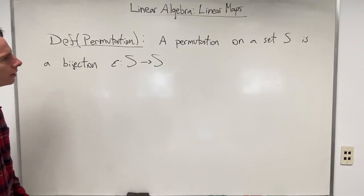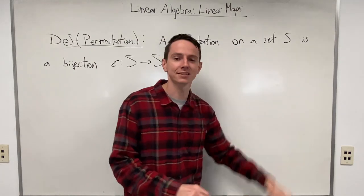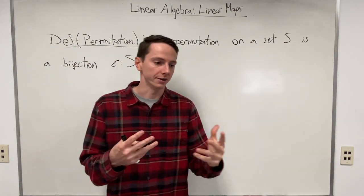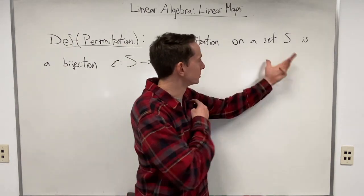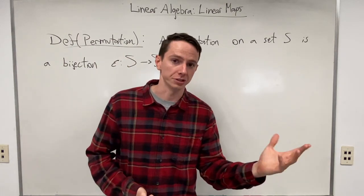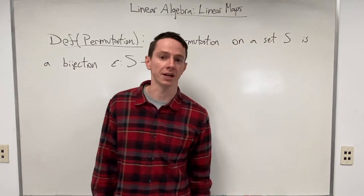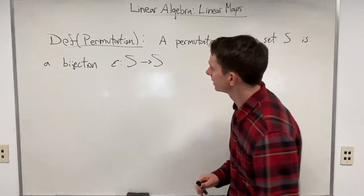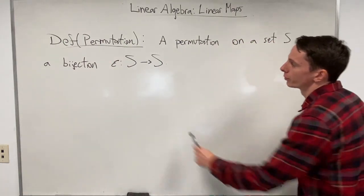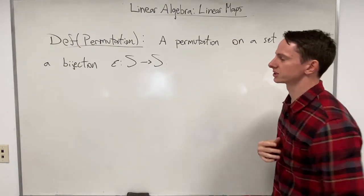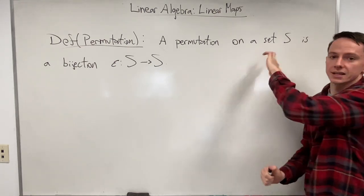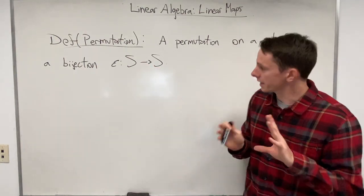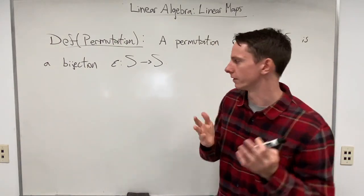A permutation is associated with a set S — notice we're talking about an arbitrary set, not a vector space. A permutation is a specific type of function: it is a bijective function in which both the domain and the codomain are the exact same set S. So a permutation is not associated with two different sets — you only need one set, which acts as both domain and codomain.